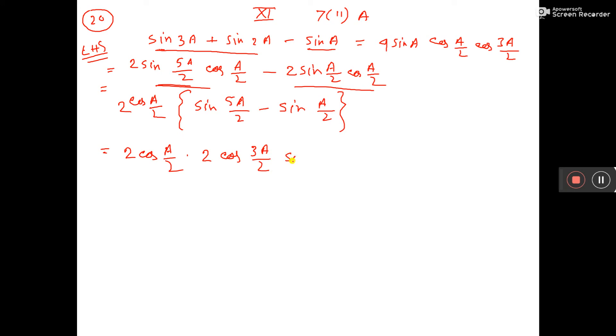It is sin c minus d by 2, that is only a, 4a by 4, that is only a. See, you have got right hand side, only the arrangement required, and that is the answer. That is equal to right hand side, you have got it.